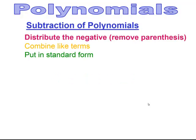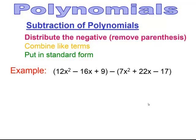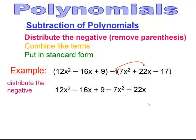Subtraction is different. When there is a negative sign on the outside of parentheses, you have to distribute that negative — essentially multiplying by negative 1 and changing the signs of everything inside those parentheses. Then combine like terms and put the result in standard form. The first parentheses comes down as-is, and then you distribute that negative to everything in the second set of parentheses.